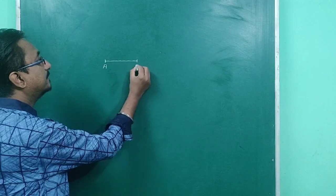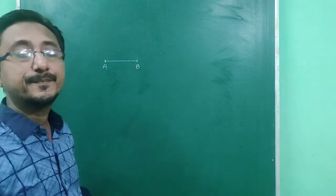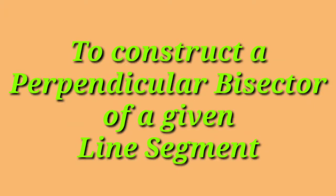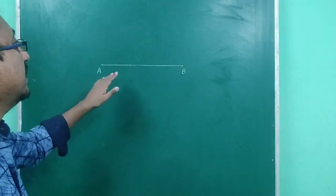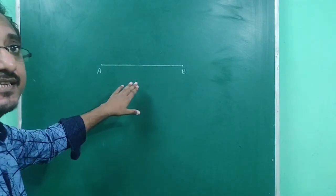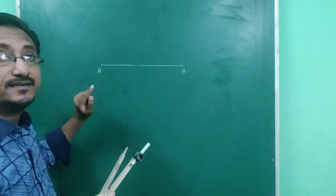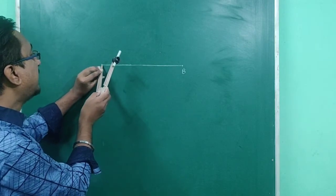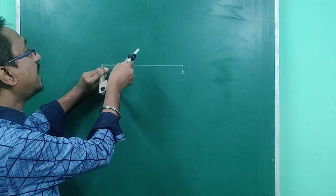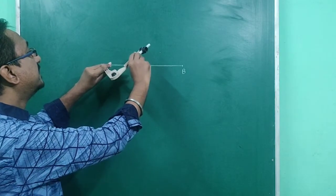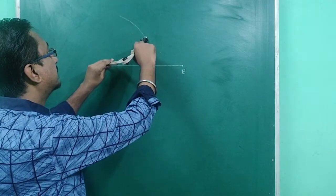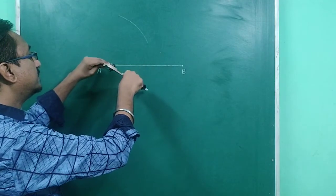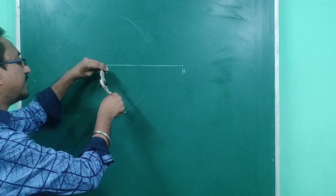Now let's construct the perpendicular bisector of a given line segment AB. I am going to construct a perpendicular bisector of this line. For this, I take center A and a radius more than half of AB. With this radius I have made one arc.